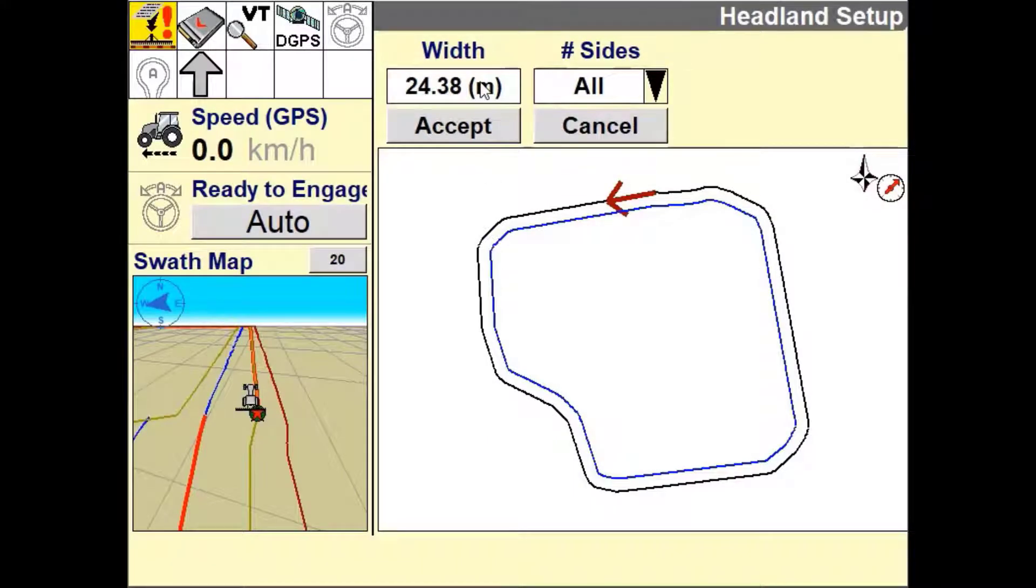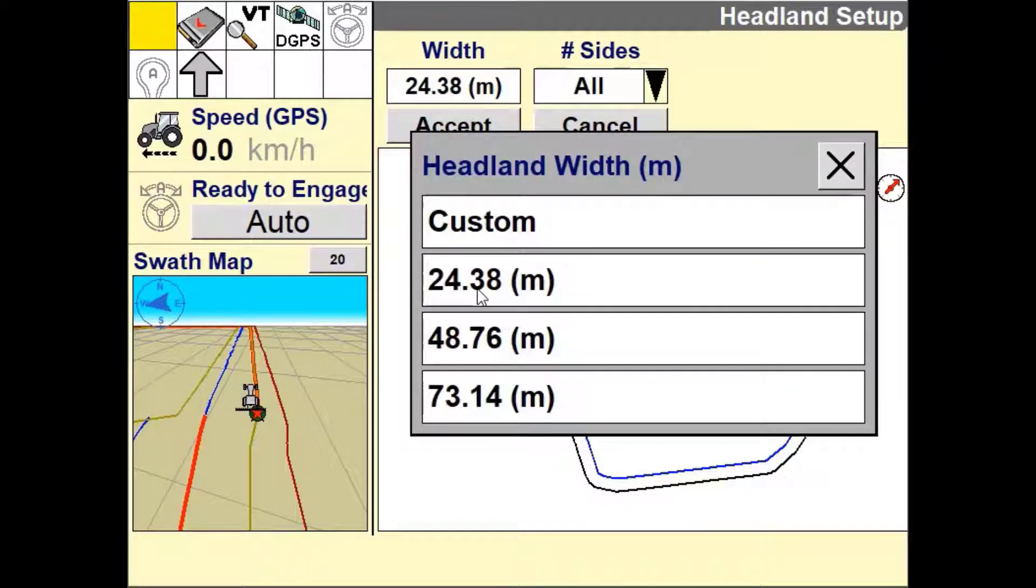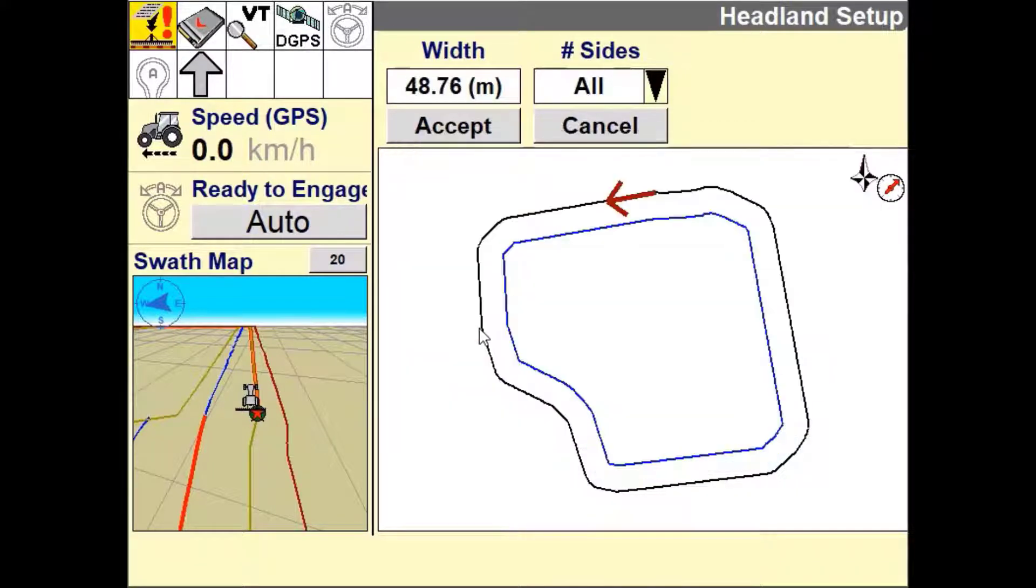A field headland is a defined boundary within a field based off the outer boundary. This inner boundary can be one end of the field or both ends of the field or follow the field boundary for its entirety.